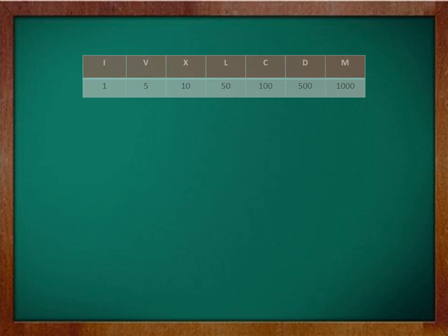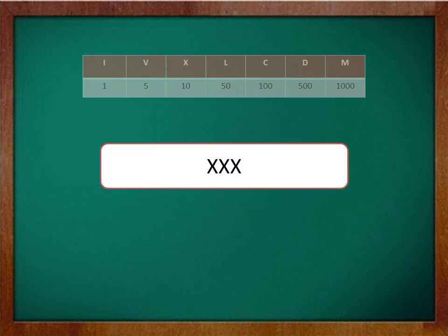Let's take a look at another example. In this case we have symbol X written three times. Since X stands for 10, we would add 10 three times and the answer is 10 plus 10 plus 10 which is equal to 30.